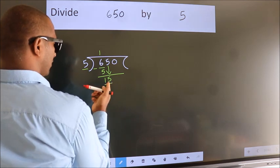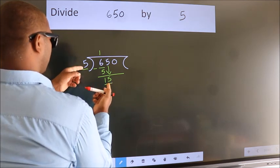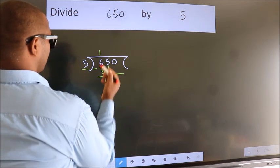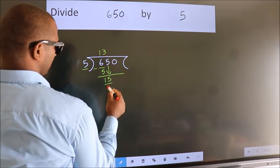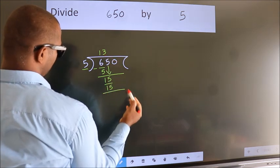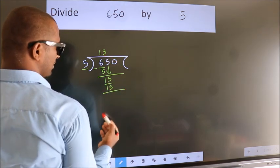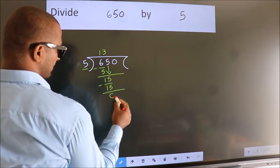When do we get 15 in the 5 table? 5 threes are 15. Now we subtract and we get 0.